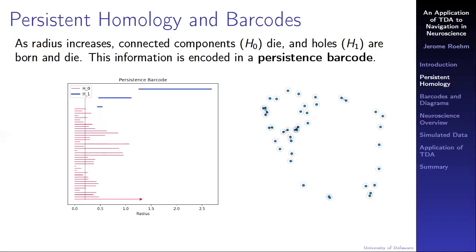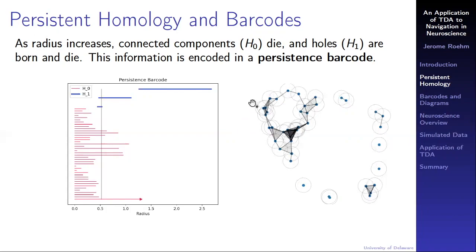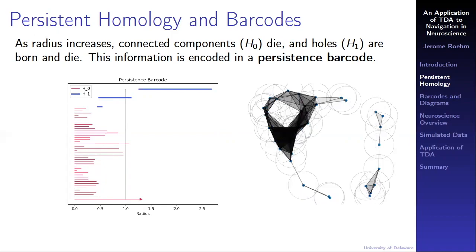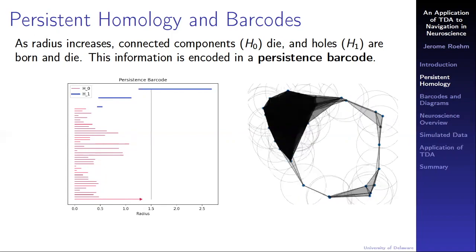At a small radius, there are many different connected components alive, represented by the red bars. As we increase the radius, some of the bars end, indicating the components died when they joined together. Here, we start to capture that tiny hole. Then the small hole is born. Pictorially, this hole corresponds to this bar. The hole is born a little after when the radius is 0.5 and persists until its death a little after 1.2. Continuing to increase the radius, we start to capture the larger hole in the lower right, which corresponds to the long bar in the barcode. Computing this barcode, which is just a matter of linear algebra, allows us to visualize when all the holes are born and die.